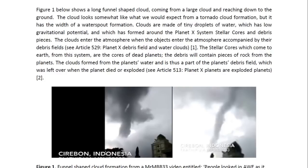Clouds are made of tiny droplets of water which has low gravitational potential, and which has formed around the Planet X system stellar cores and debris pieces. The clouds enter the atmosphere when the objects enter the atmosphere accompanied by their debris fields. You may look at article 529 entitled Planet X Debris Fields and Water Clouds for more details.